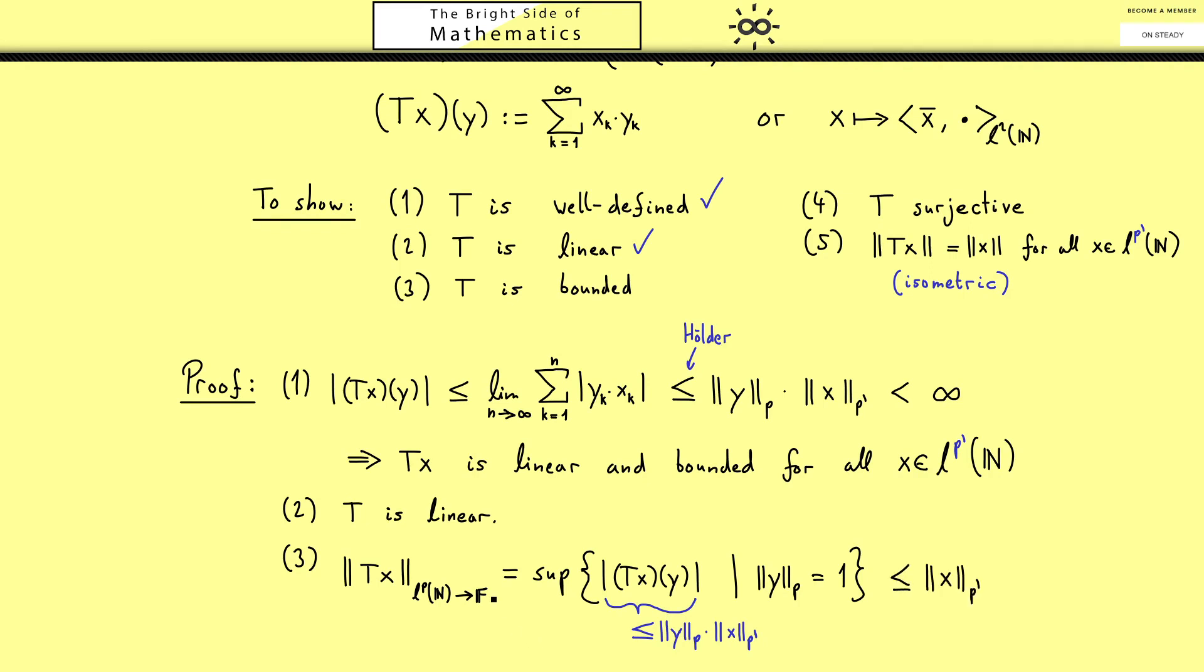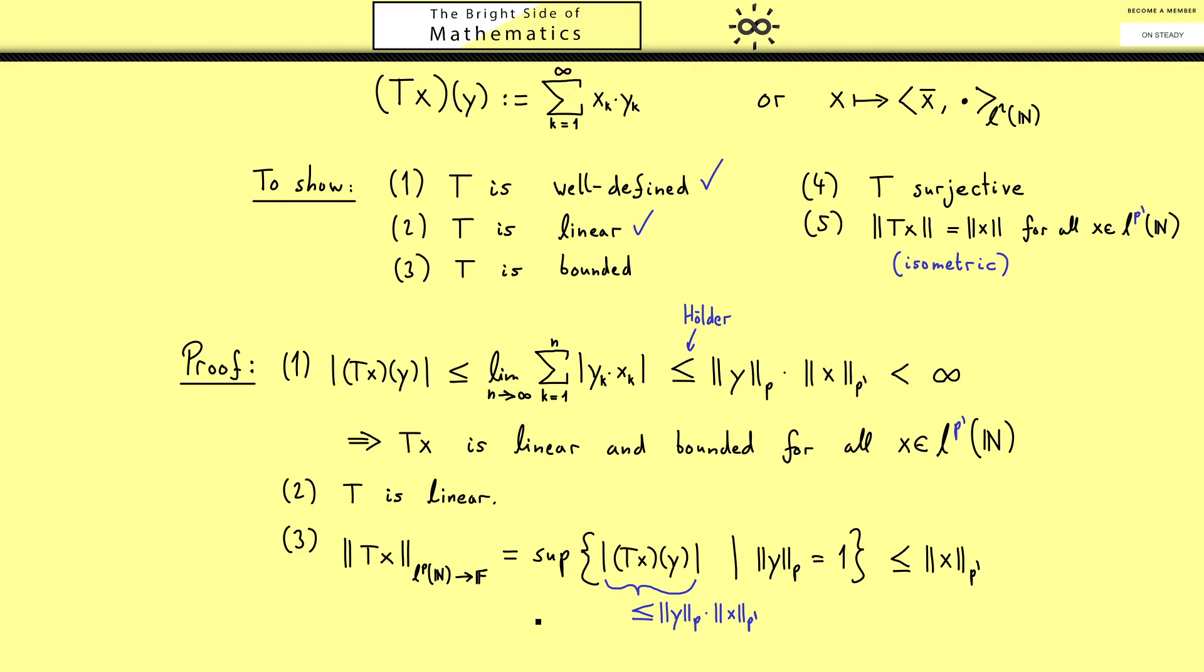In other words the whole operator norm is less or equal than the norm of x. Now to get the operator norm of T itself we have to divide by the norm of x on both sides. Then we take the supremum and get that the operator norm of T is less or equal than 1. Hence we have a bounded operator. We can tick part 3 as well.